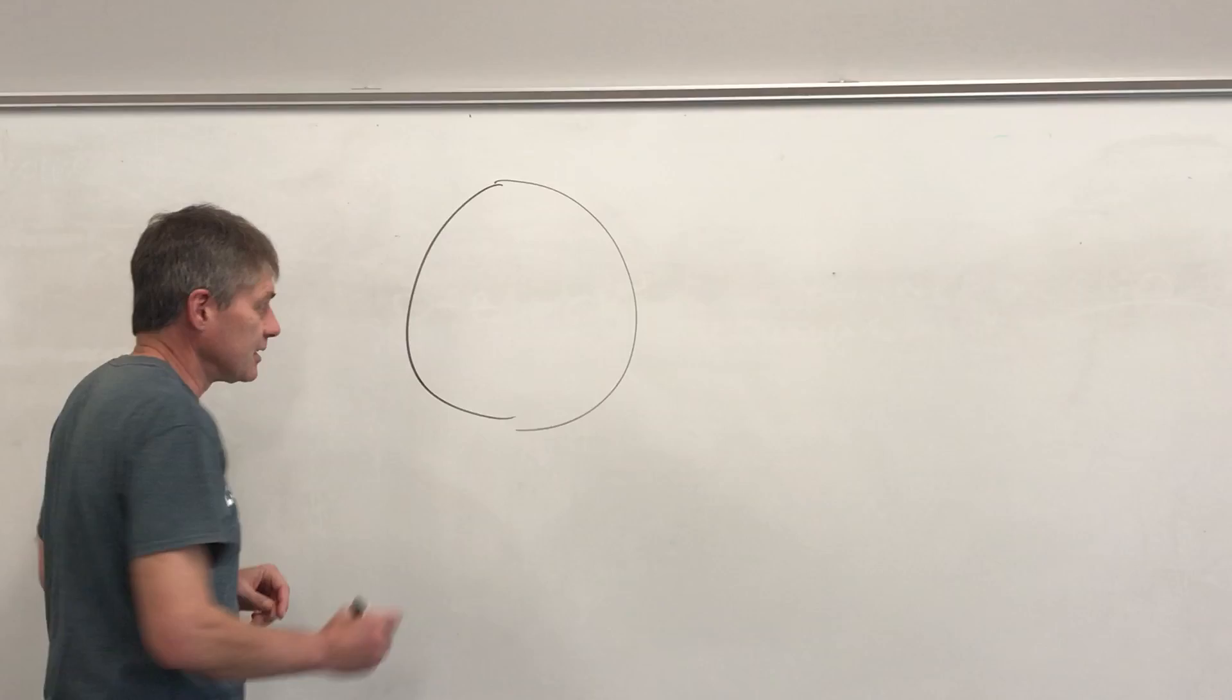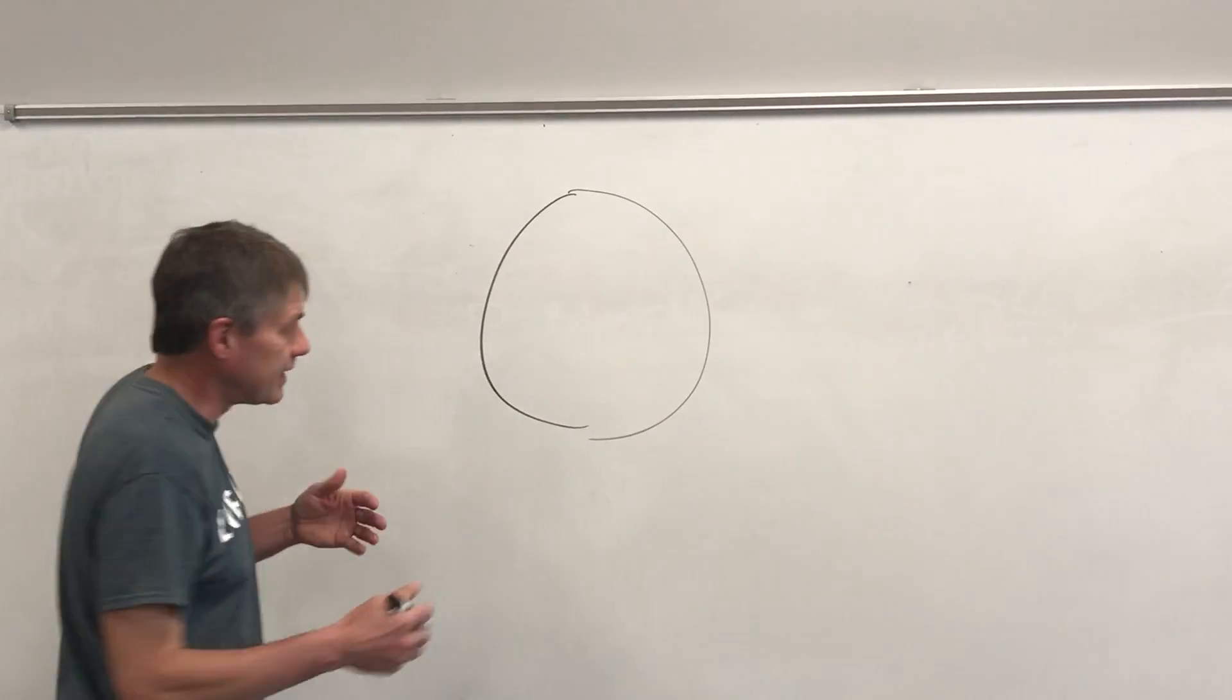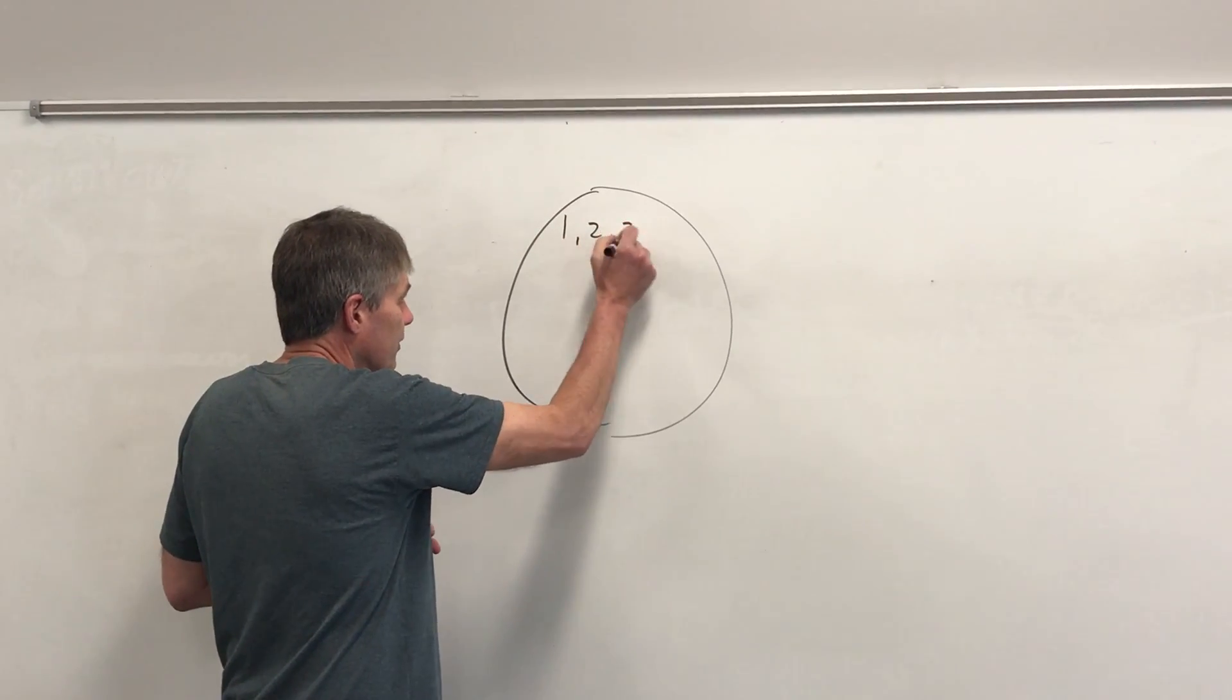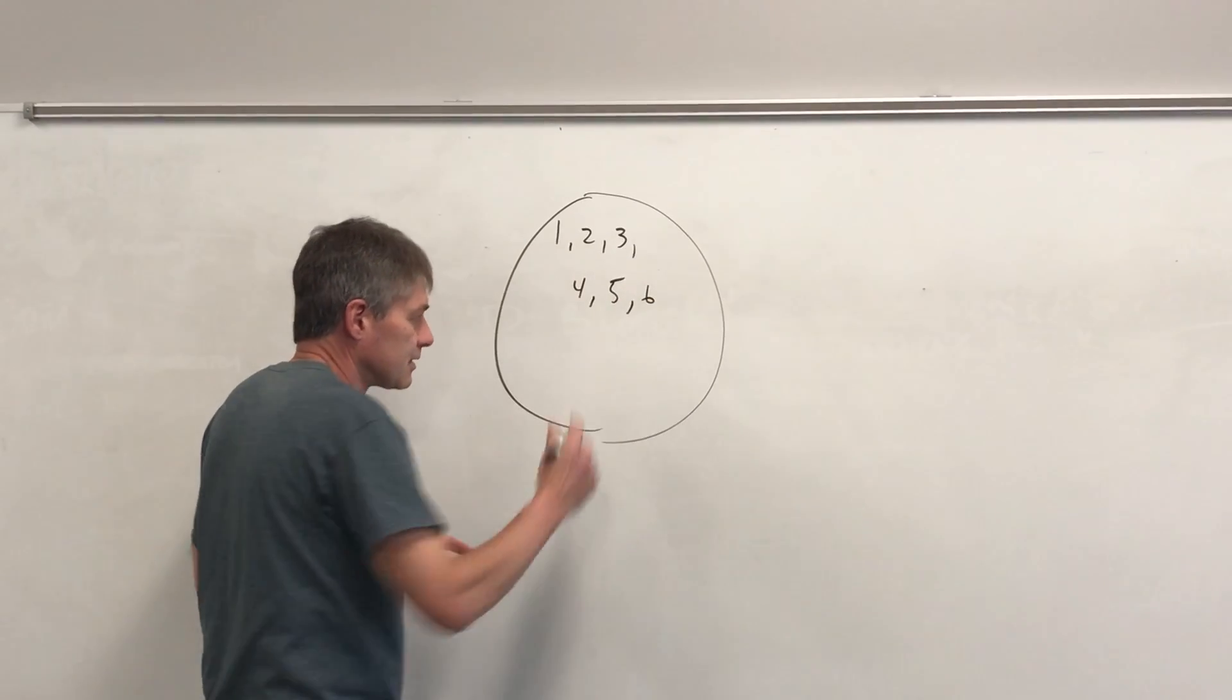Let's say I'm rolling a dice. All the possibilities of the die are going to be 1, 2, 3, 4, 5, and 6.